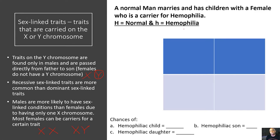Let's look at this Punnett square and examine sex-linked traits by looking at hemophilia. A normal man marries and has children with a female who is a carrier for hemophilia. The normal man has the big H, standing for normal, and then the Y chromosome. The female who is a carrier for hemophilia has an X with a lowercase h, and then an additional X.